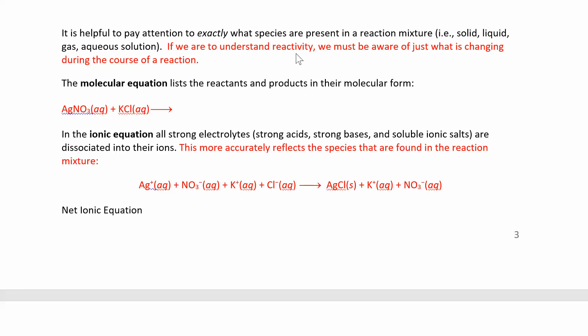So we're going to write what we just wrote — the molecular equation, where everything is listed in its molecular form. Then we're going to take that and split everything up into the ionic equation. We're going to figure out what kind of ions are present, and then we'll look at the net ionic equation — what species are actually reacting to make some kind of product.